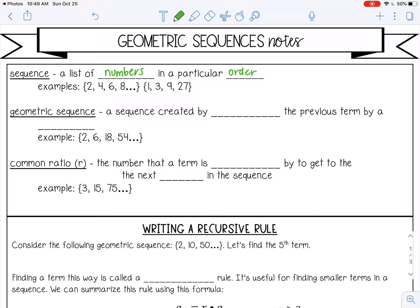So 2, 4, 6, 8. I'm adding 2 each time. 1, 3, 9, 27. I'm multiplying each time. So there's going to be some type of pattern.